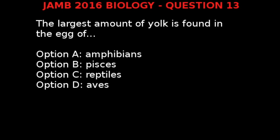JAM 2016 Biology question 13. The largest amount of yolk is found in the egg of: option A, amphibians.